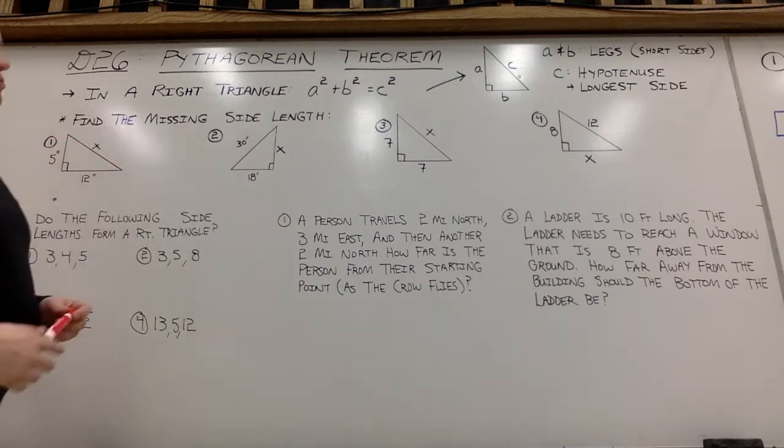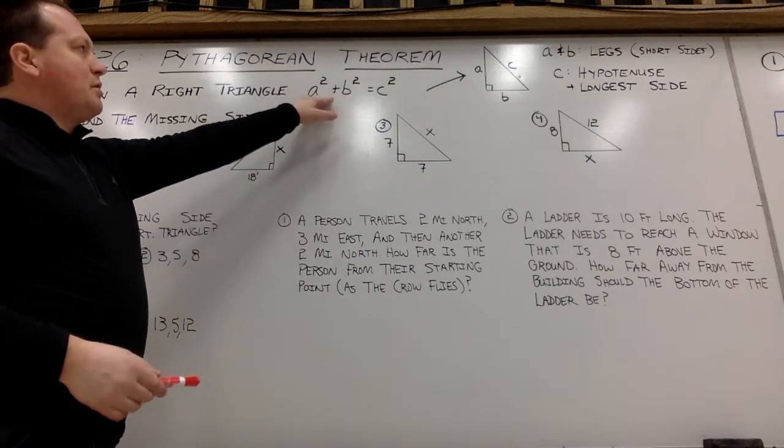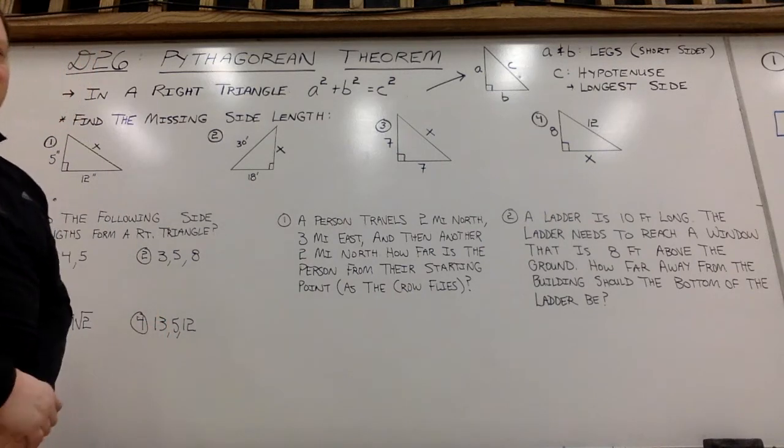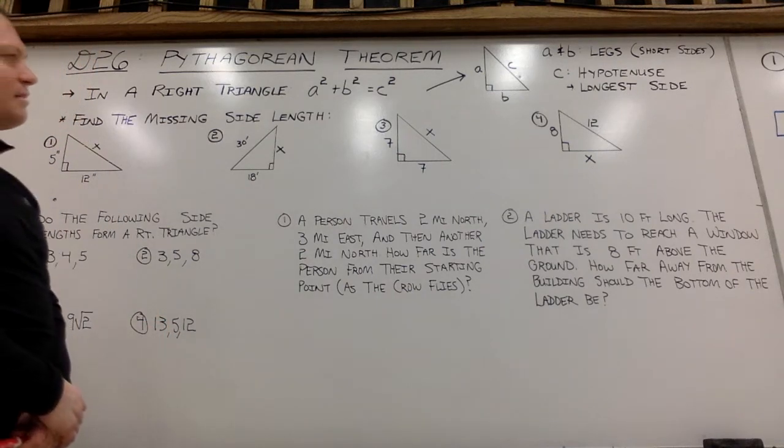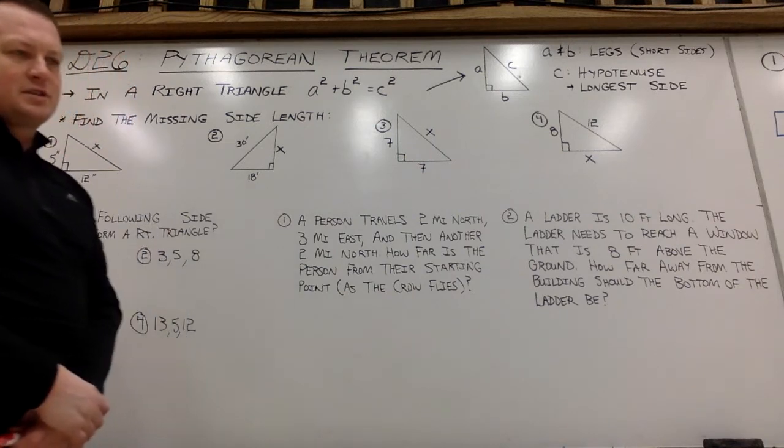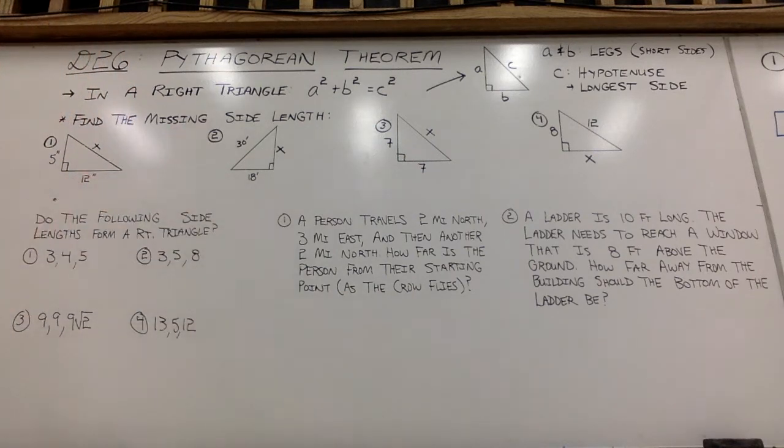So we are going to use the Pythagorean Theorem. I'm going to give you two of the three side lengths in a right triangle. And then your job is to find the missing third side length using inverse operations. So in example one, I've got my two legs. a is 5, b is 12, or you could say a is 12, b is 5. And then c, your hypotenuse, is x.